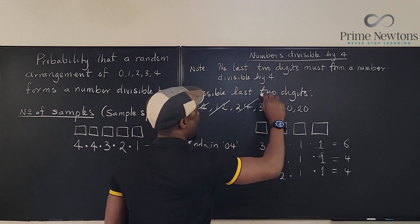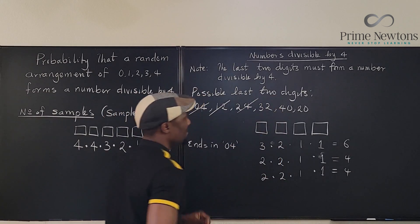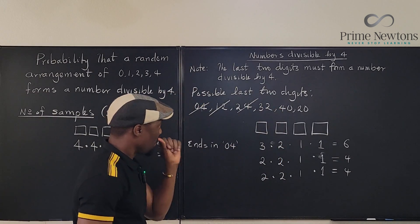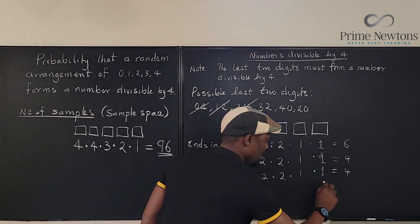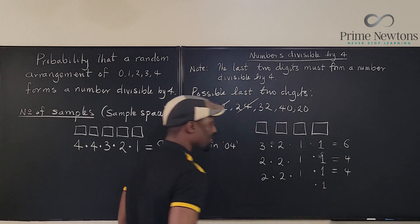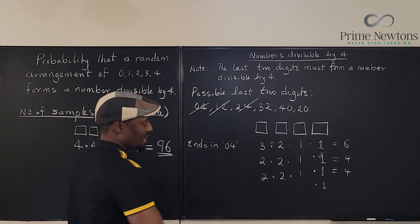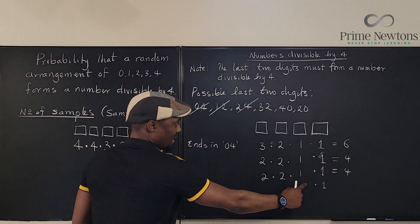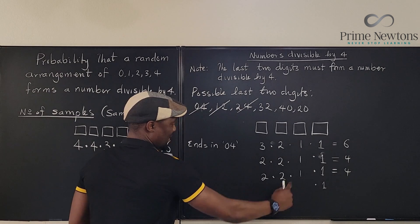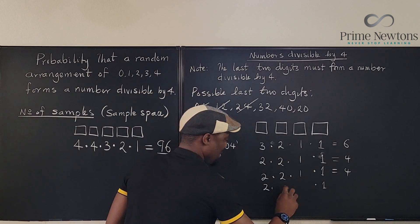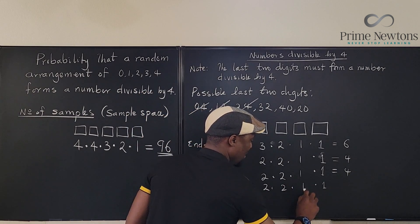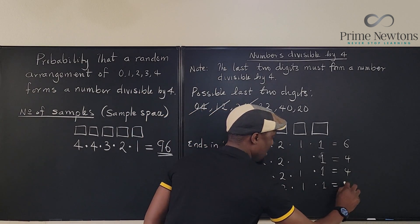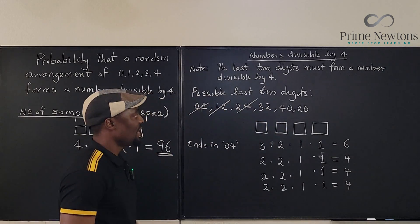For endings in 32: same logic applies — 1 option for the block, and the remaining digits give 2 × 2 × 1 = 4.